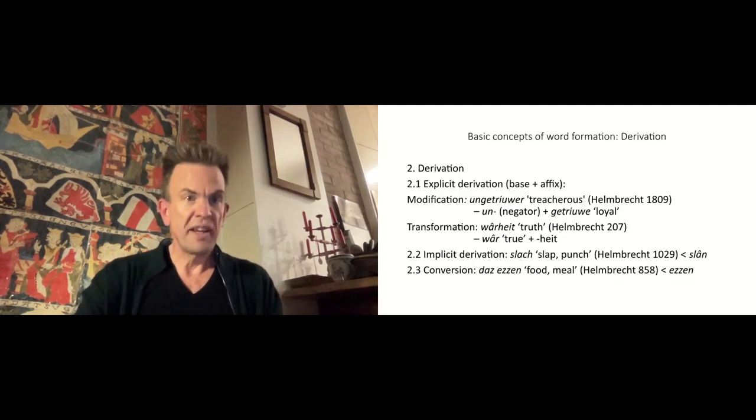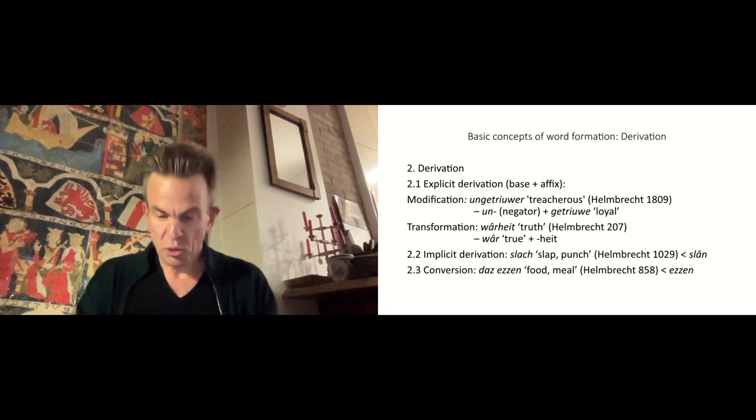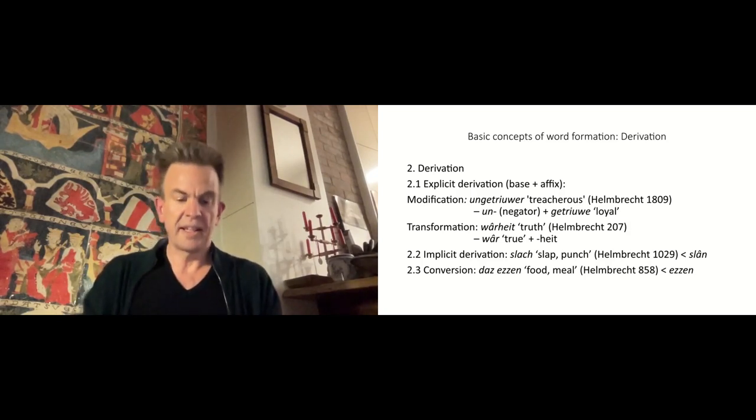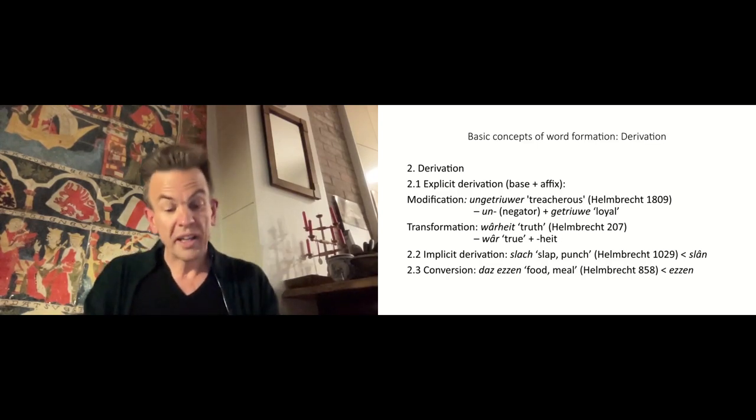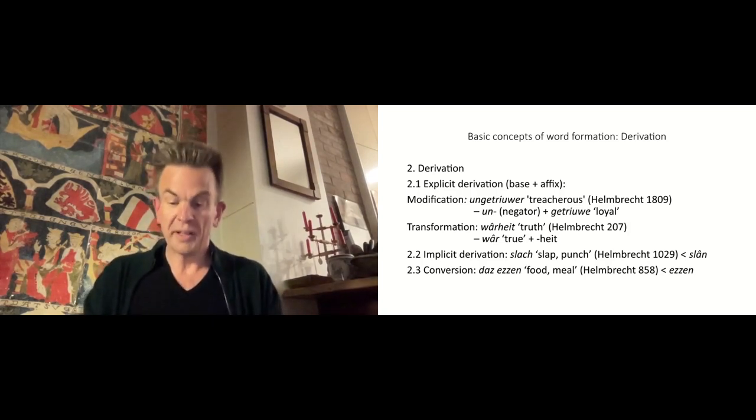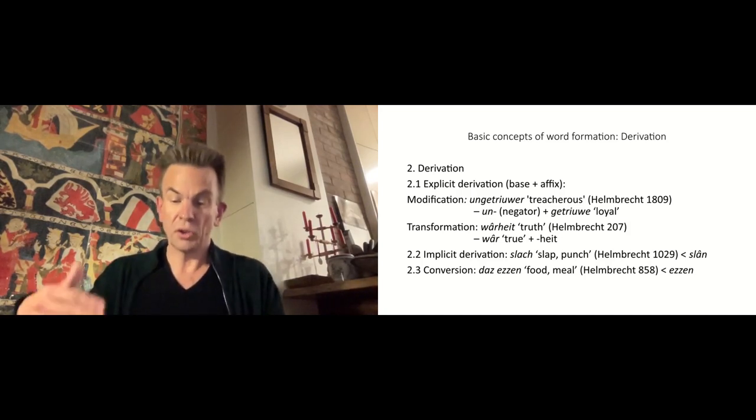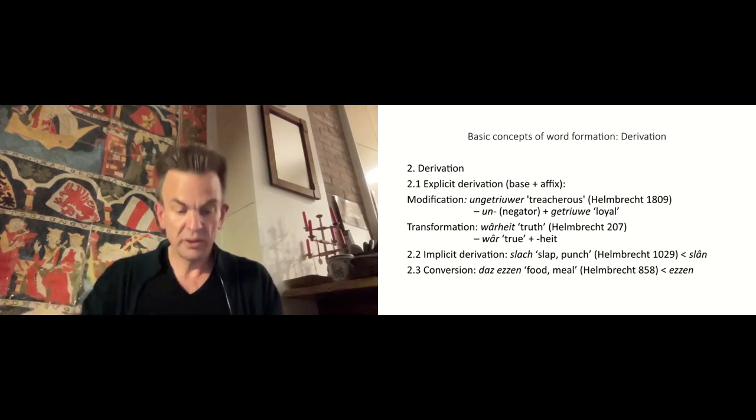In the field of derivation, a distinction is made between an explicit derivation with the use of affixes and other cases. In explicit derivation, a base, usually a basic morpheme, is transformed into a new word by adding a prefix, suffix or circumfix. The part of speech of the base may remain unchanged, as in the case of ungetriuwe, treacherous, which was created by prefixing getriuwe, loyal, with un. In this case, we are dealing with modification.